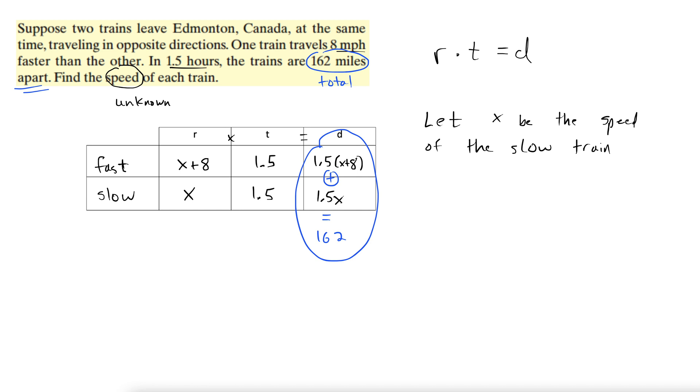Let's pull that equation and forget about the table. We have 1.5(x+8) plus 1.5x equals 162. Now, the table really helped me find that equation. A lot of people try to go straight to the equation and get tangled up. This table is really helpful. It's meant to help, and it does help. Now we can solve this.